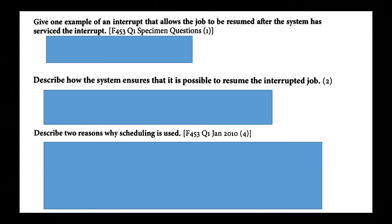The next question: explain one example of an interrupt that allows the job to be resumed after the system has serviced the interrupt. Describe how the system ensures that it is possible to resume the interrupted job. Describe two reasons why scheduling is used. Pause the video if you want to have a go.